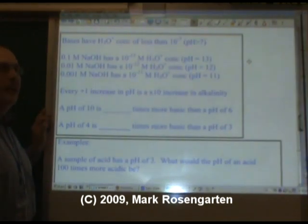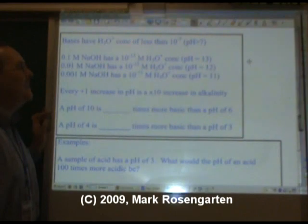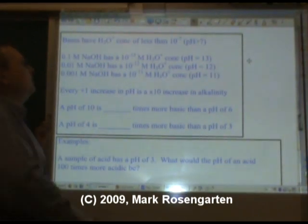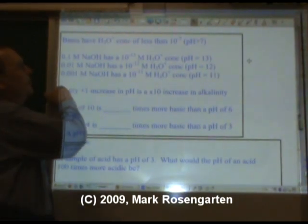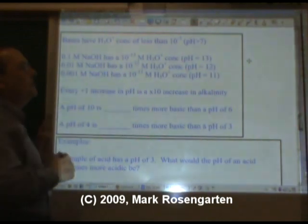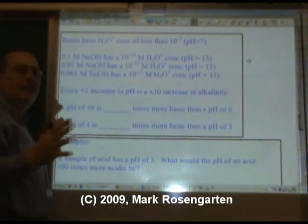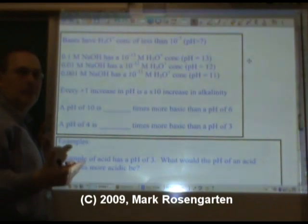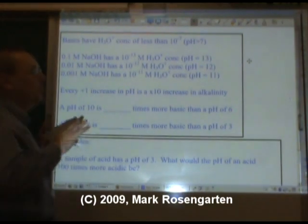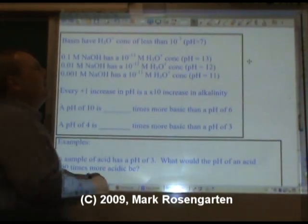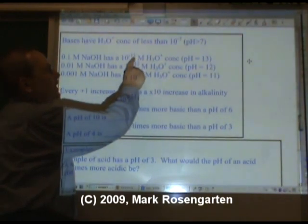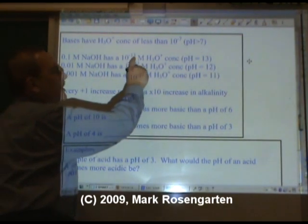Bases have an H3O plus concentration that's less than 10 to the negative 7. For example, a 10th molar NaOH solution has a 10 to the negative 13th molar H3O plus. For those of you in advanced classes, this is because of KW, the ionization constant of water, which we're not going to get into in this video. The pH of this, take negative 13 and reverse the sign, the pH is 13.